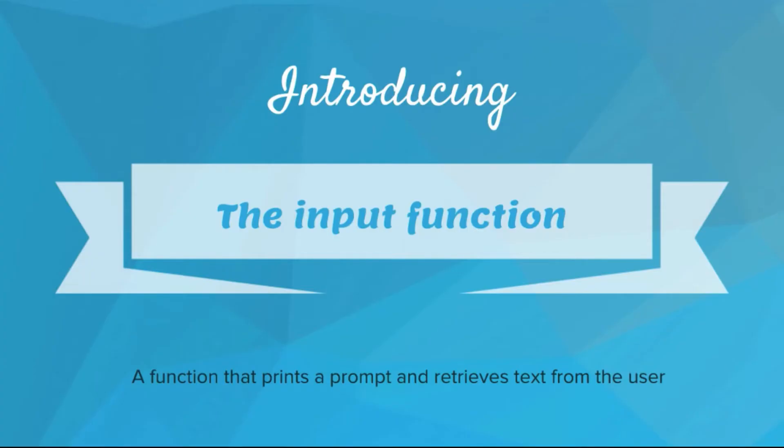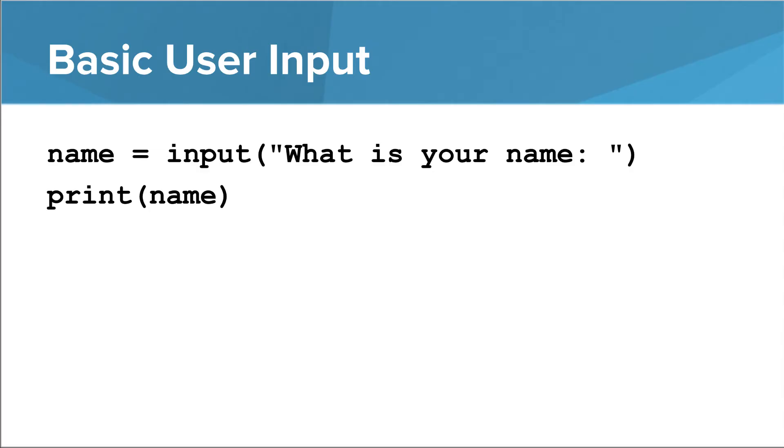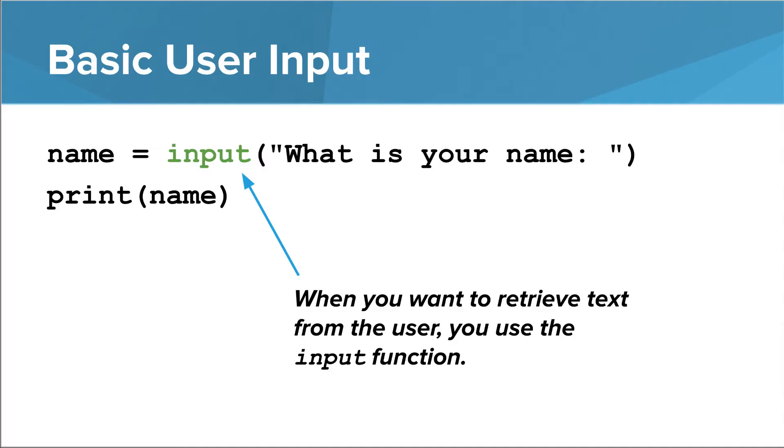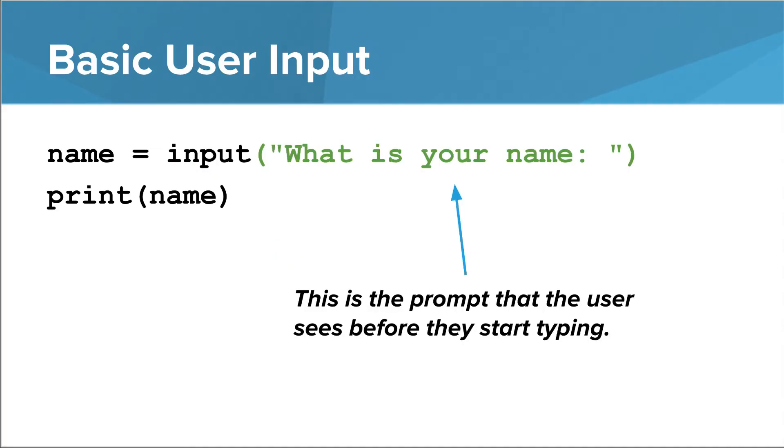This is a function that prints a prompt and retrieves text from the user. Here's what it looks like, alongside a variable and a print statement. The function is called input, and it requires you to include a string in parentheses. This is the prompt that the user sees before they start typing.